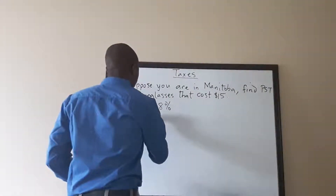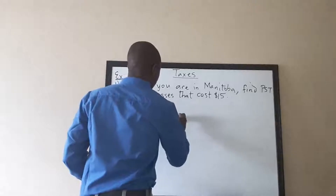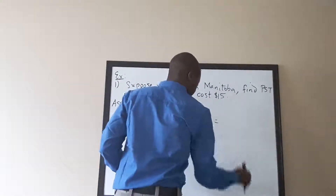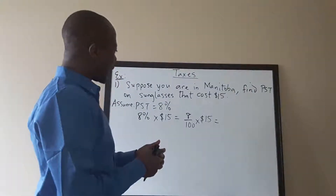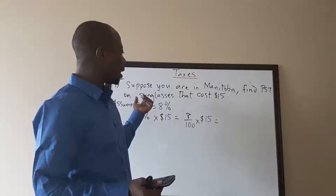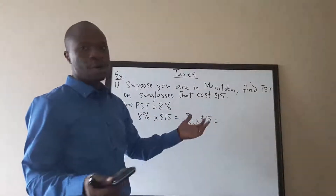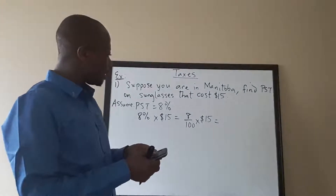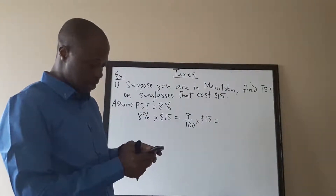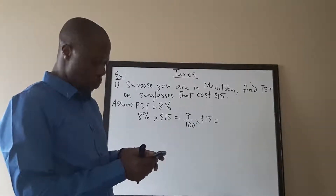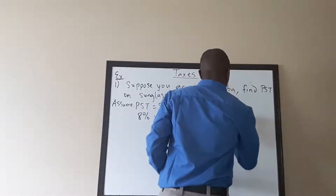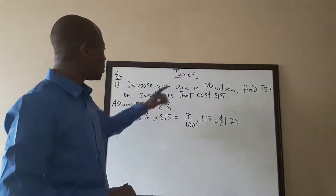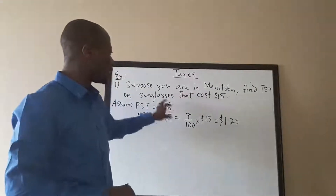So we're going to do 8% of $15, which is 8 over 100 times 15. We can plug this into the calculator — 8 times 15 divided by 100, or 8 divided by 100 then multiply by 15. From the calculator, the provincial sales tax on a $15 pair of sunglasses in Manitoba will be $1.20.